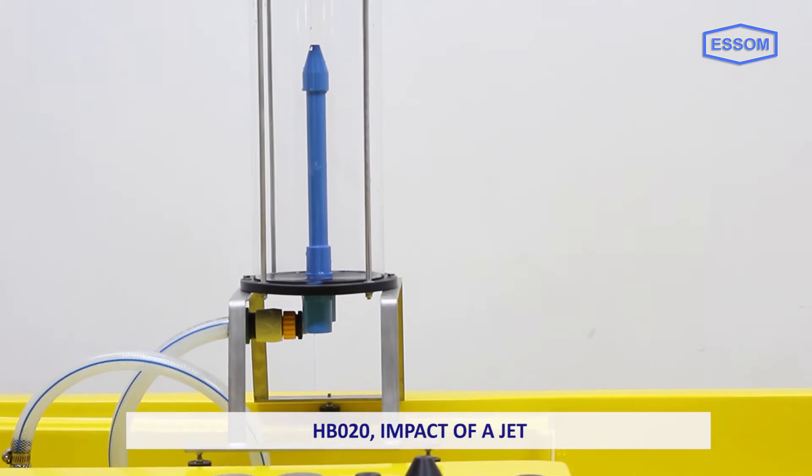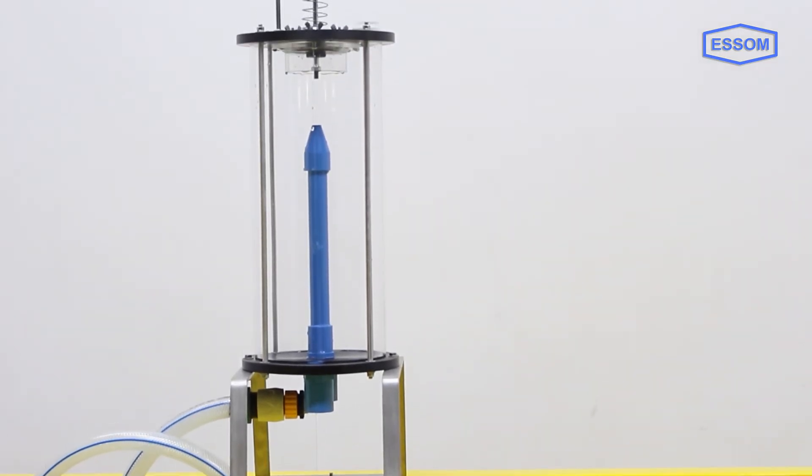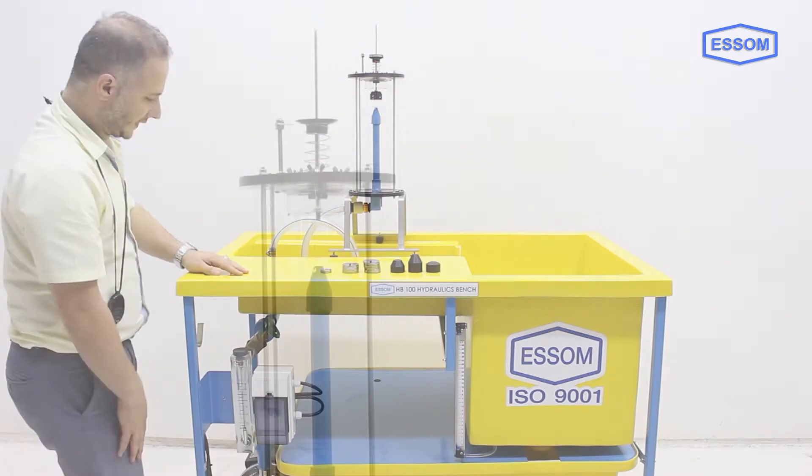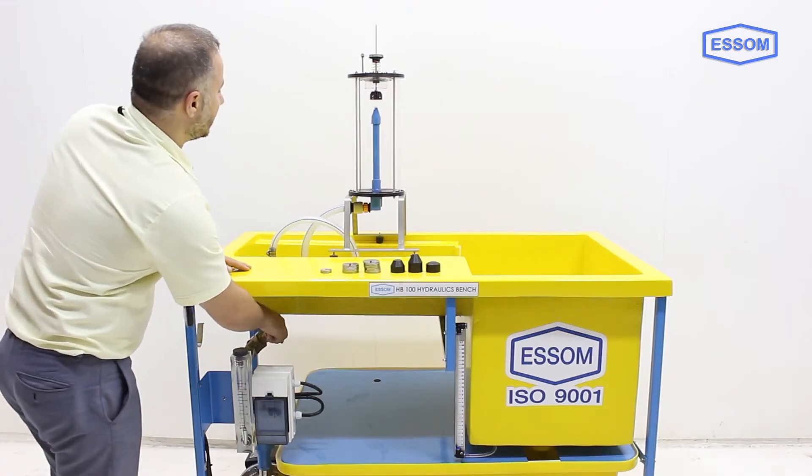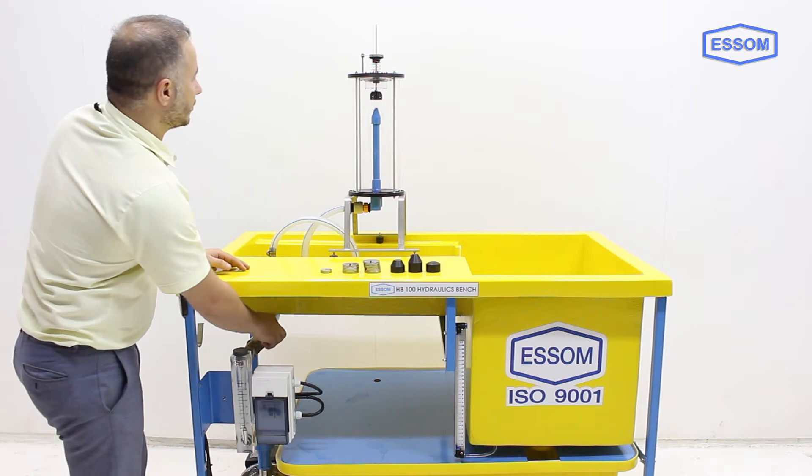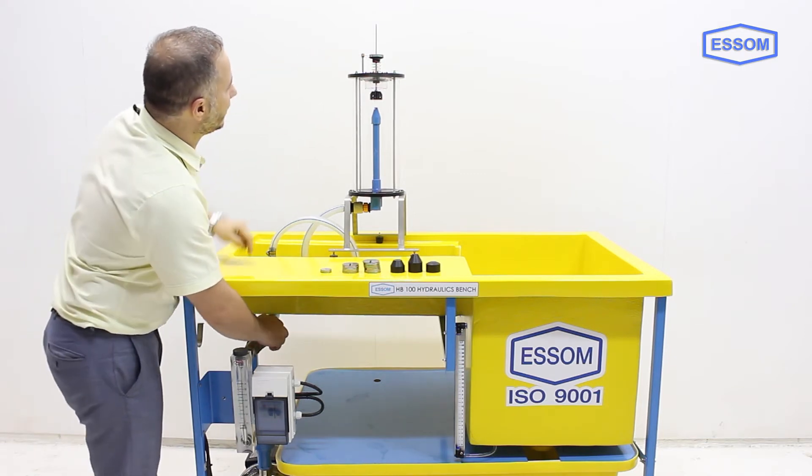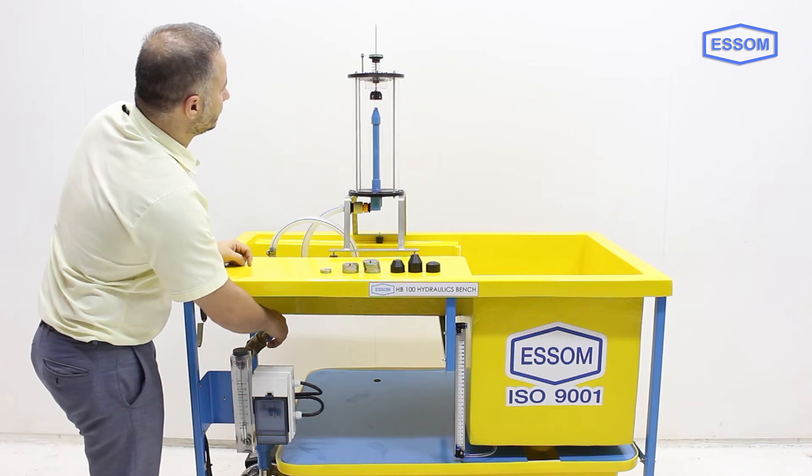SMHB020 Impact of a Jet. This equipment provides measurement of force developed by a water jet on different stationary targets. It is to be used with hydraulics bench HB100 or HB100N, separately supplied. The equipment consists of a removable clear acrylic cylinder.